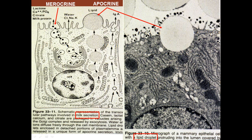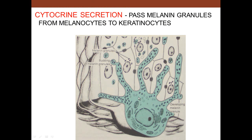In mammary cells, we see both merocrine and apocrine secretion. Casein gets out via merocrine — exocytosis without loss of plasma membrane. But milk also contains lipids, which are not water soluble, so a little bit of membrane must surround the lipid when discharged — that's apocrine secretion. So the mammary cell uses both merocrine and apocrine. Cytocrine secretion is when melanocytes produce melanin granules and pass them to keratinocytes — the different skin colors reflect the amount of melanin granules passed on.